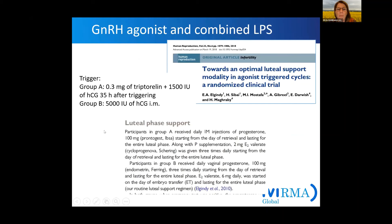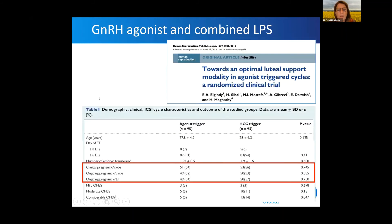Professor Iman published a study comparing two groups: one with a conventional approach giving a trigger with 5,000 units hCG, compared to a GnRH agonist trigger followed by 1,500 units hCG afterwards, plus additionally intense luteal phase support. The good thing was that with this approach we can achieve the same clinical pregnancy rate with agonist trigger combined with intense luteal phase support and low-dose hCG compared to hCG alone.